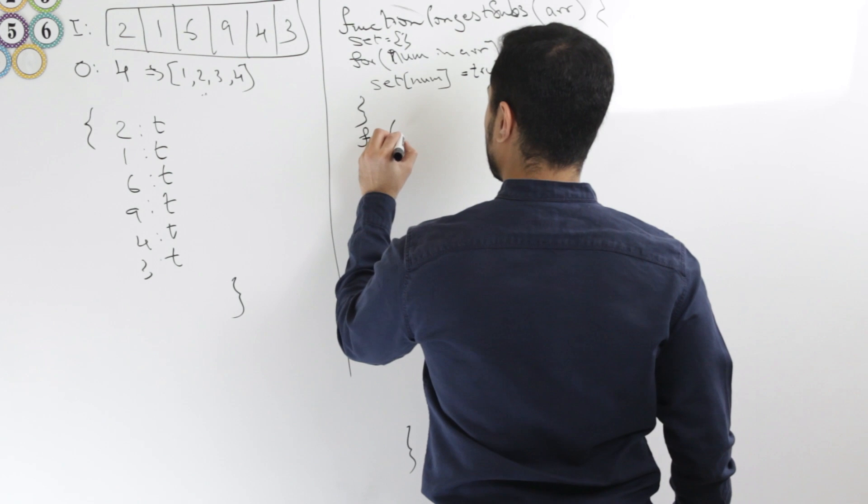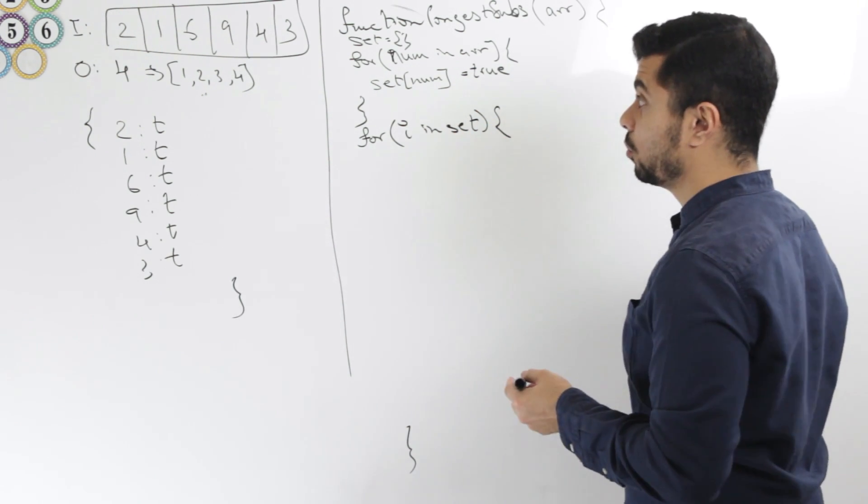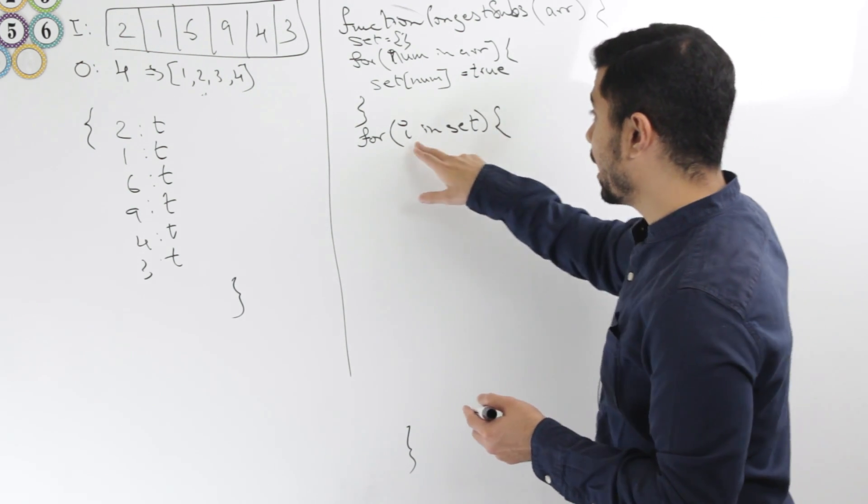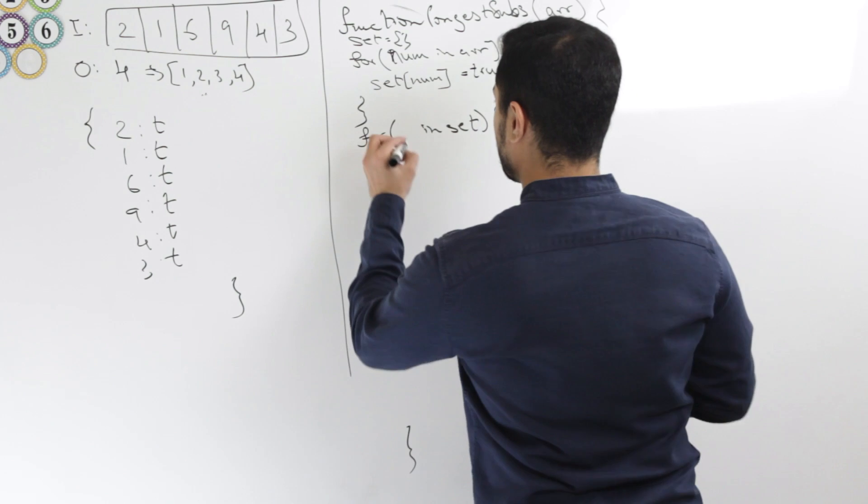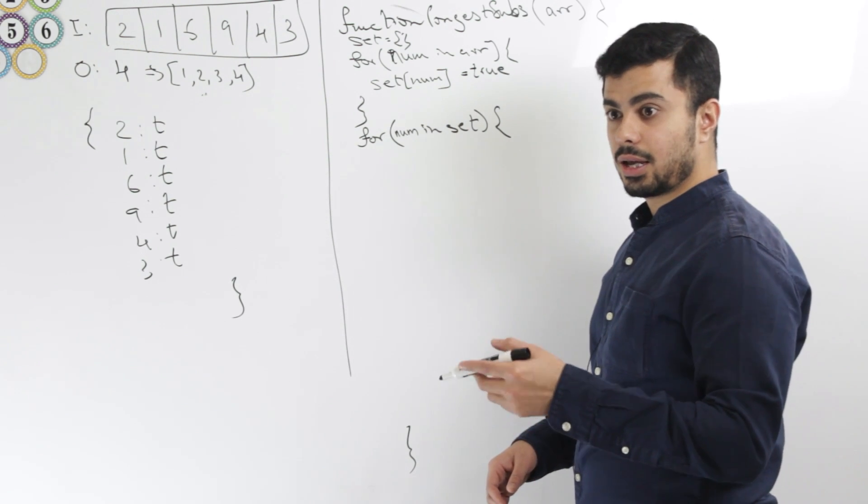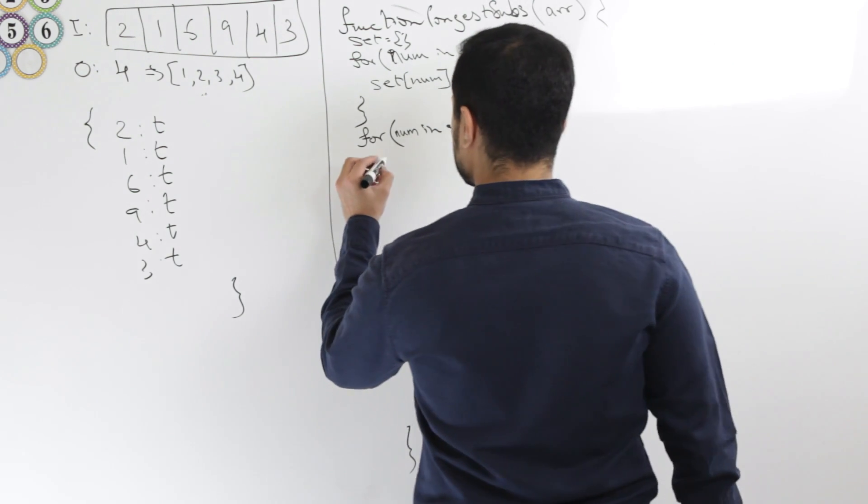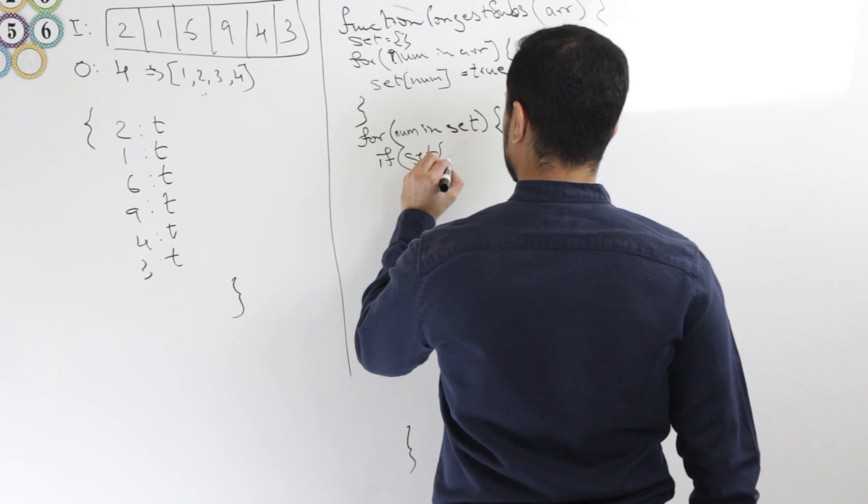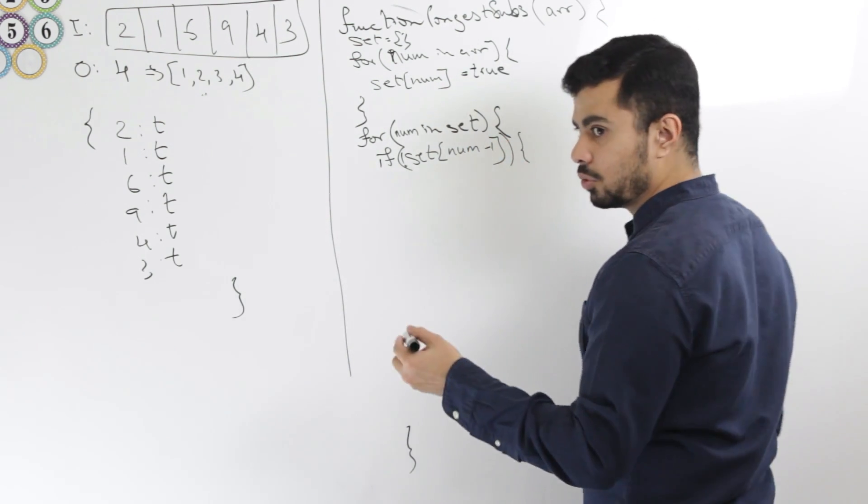Now, the next thing I'll do is I'll be iterating over the sets, right? So I'll say for number in set. I will check whether the number minus one exists. If it does, then I don't do anything. If it doesn't, then I go into my while loop, right? So I'll say if not set num minus one, if it doesn't exist, do this.